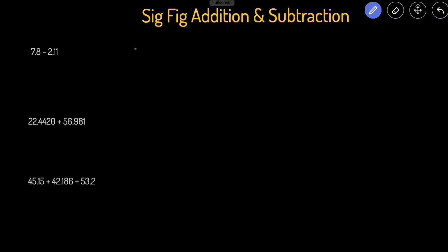When you're first learning it, the easiest way is to just line the numbers up on top of each other. So we'll put 7.8 minus 2.11, just like in elementary school, line the decimal points up. Then we'll just execute this: 7.8 minus 2.11, that's 5.69. Then we're going to underline the last significant figure.